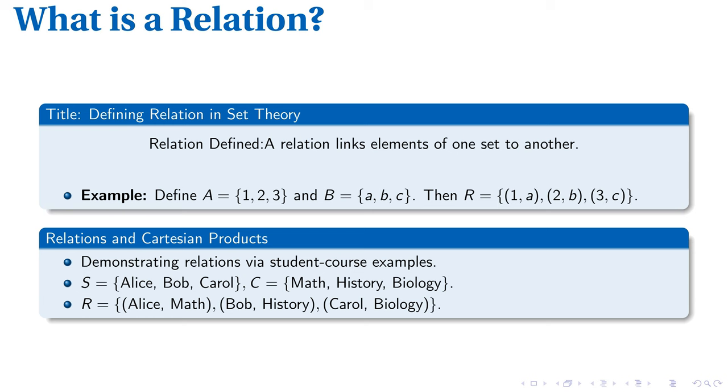Shifting to a real-world context, imagine we have sets of students and their courses. The students are Alice, Bob, and Carol, while the courses are Mathematics, History, and Biology. We can directly relate students to their chosen courses, creating a relation that mirrors a Cartesian product.